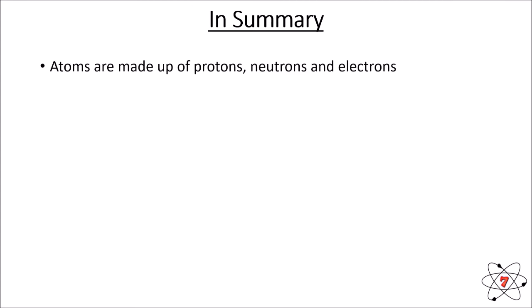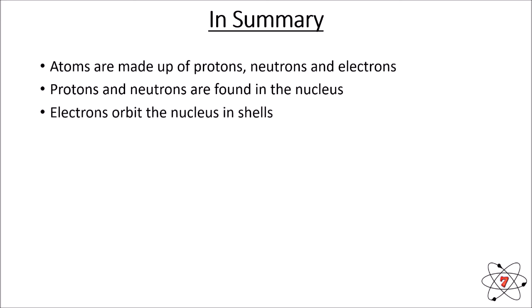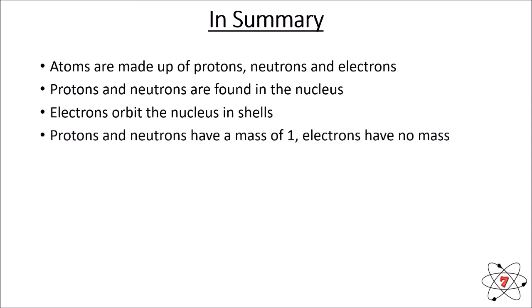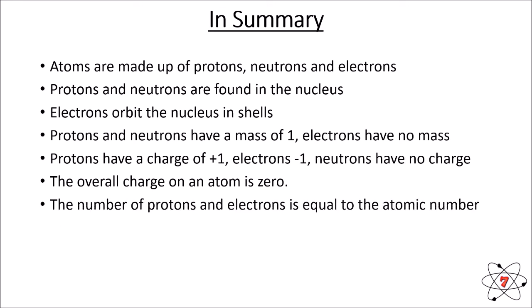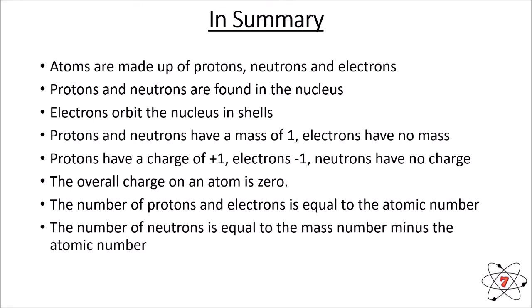In summary: atoms are made up of protons, neutrons, and electrons. Protons and neutrons are found in the nucleus. Electrons orbit the nucleus in shells. Protons and neutrons have a mass of 1 AMU; electrons have no mass. Protons have a charge of plus 1, electrons minus 1, and neutrons have no charge. The overall charge on an atom is zero because the number of protons and electrons is equal, so charges cancel out. The number of protons and electrons equals the atomic number, and the number of neutrons equals the mass number minus the atomic number. I hope you can now work out the number of protons, neutrons, and electrons, and the charges involved. Until next lesson, keep on learning.